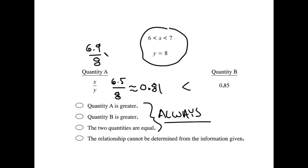What's 6.9 divided by 8? Well, that comes out to about 0.86. And so I have this conflicting case where quantity a is greater.